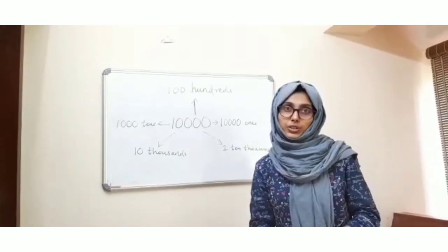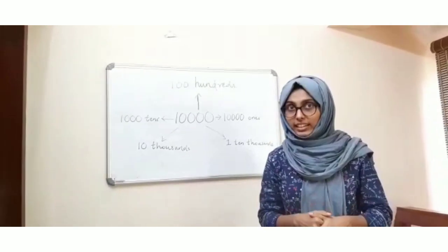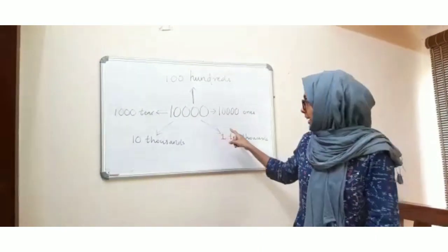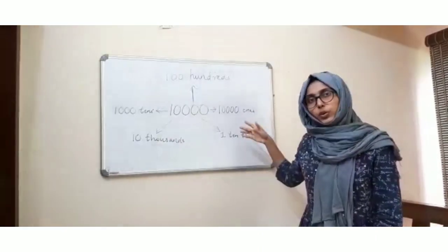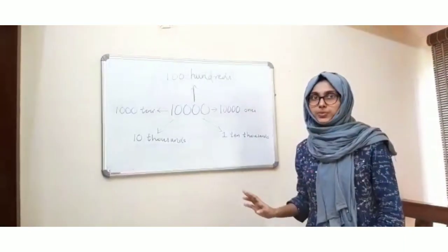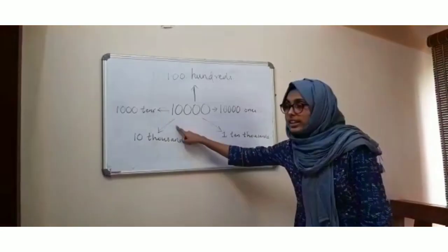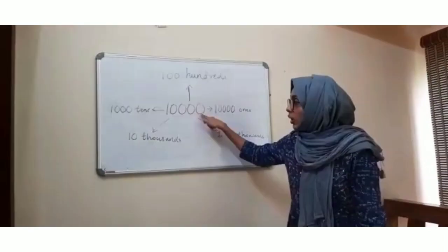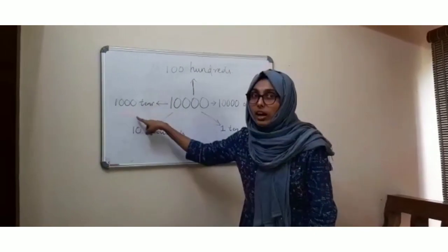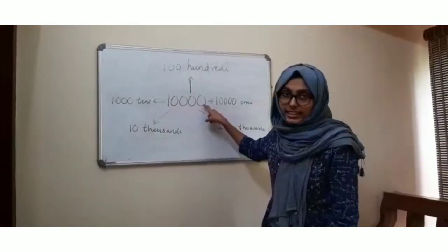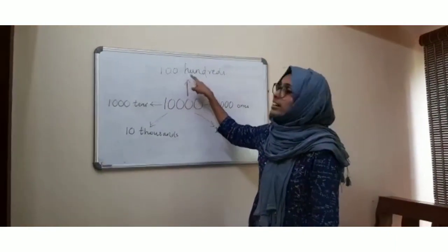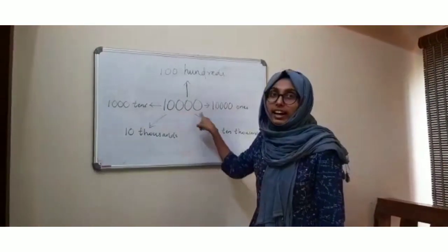So now friends, you are going to study how we can write 10,000 in different forms. One: you can write 10,000 once. Another: you can write 1 ten-thousand. Next: you can write 1,000 tens. And the last method: you can write 100 hundreds.